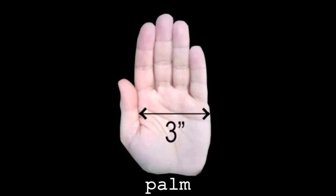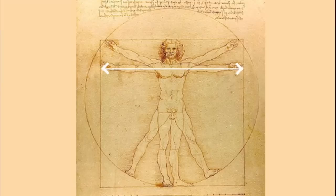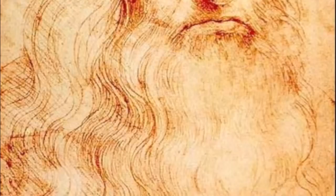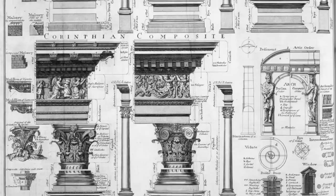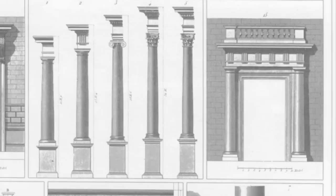Since the beginning of time, people have created systems of proportion. Vitruvius, a Roman architect among other things, wrote a treatise on architecture and in it analyzed the human body, its proportions, and their relationships. Leonardo da Vinci later put Vitruvius's thoughts to paper.